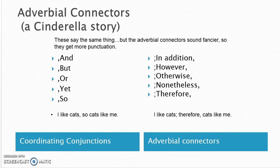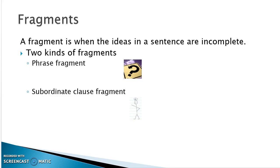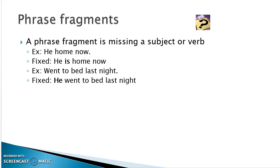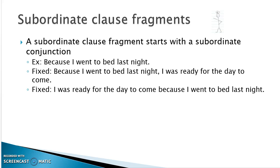Now let's move on to fragments. A fragment is basically an incomplete sentence — it's either missing a subject or a verb, or it starts with a subordinate clause and isn't fully finished. For phrase fragments, here are examples: 'He home now' — what is he doing at home? It should be 'He is home.' 'Went to bed last night' — unclear who did it; it should be 'He went to bed last night after he came home.'